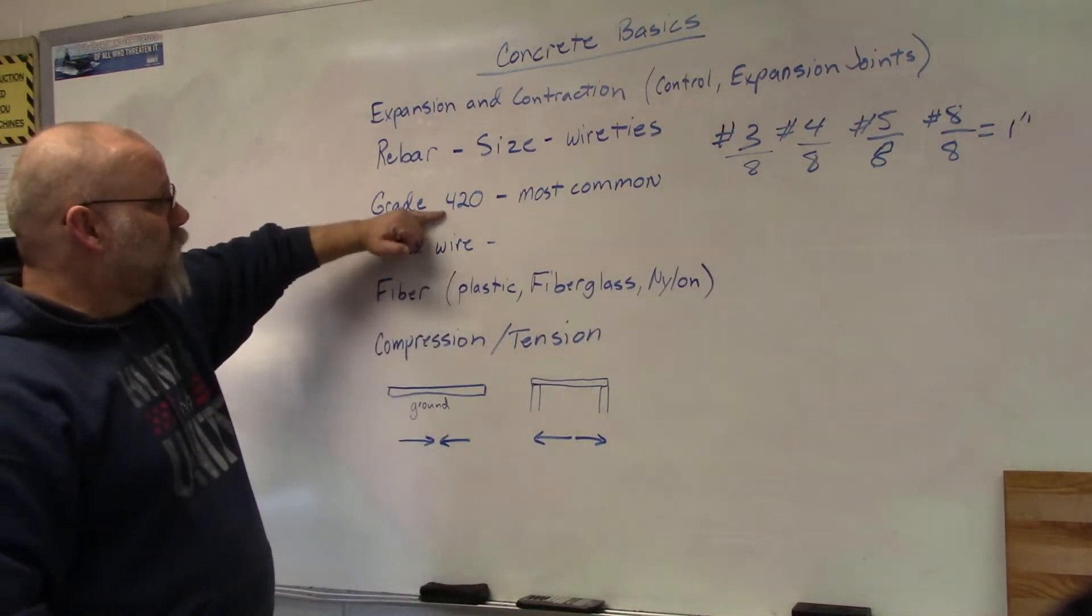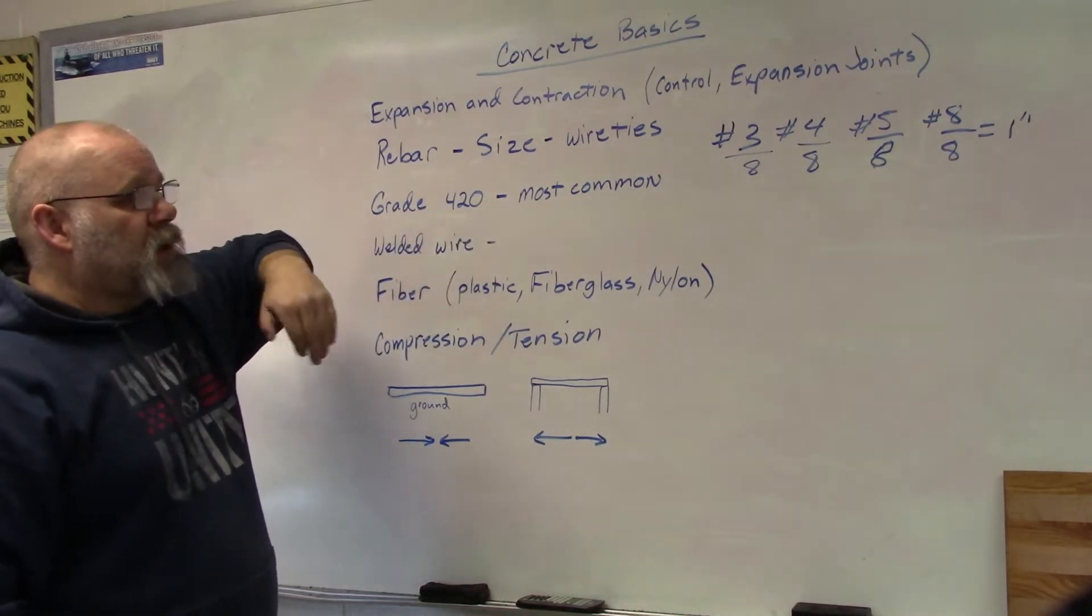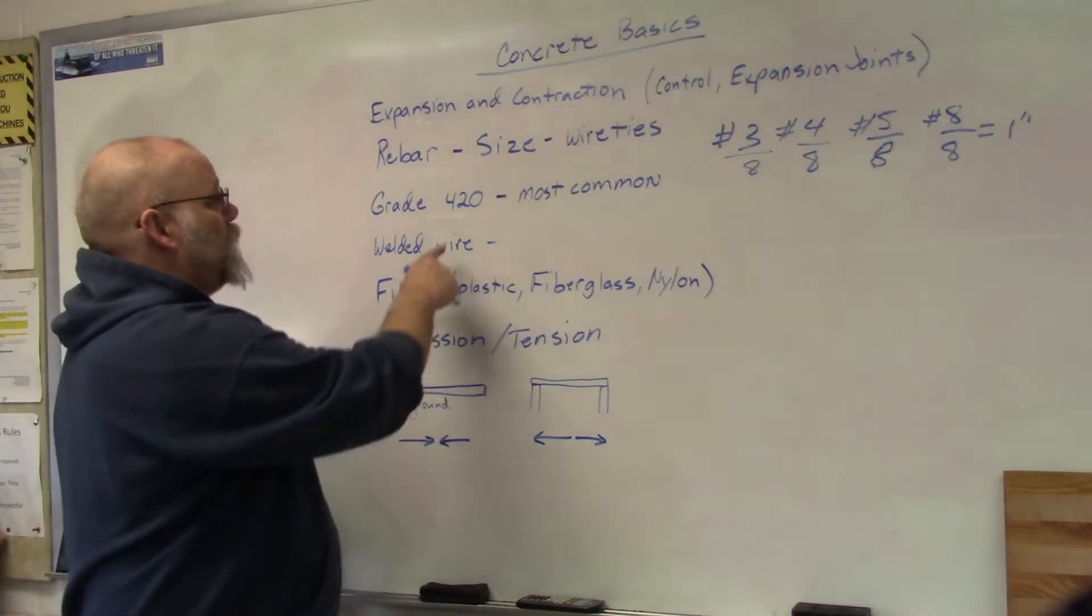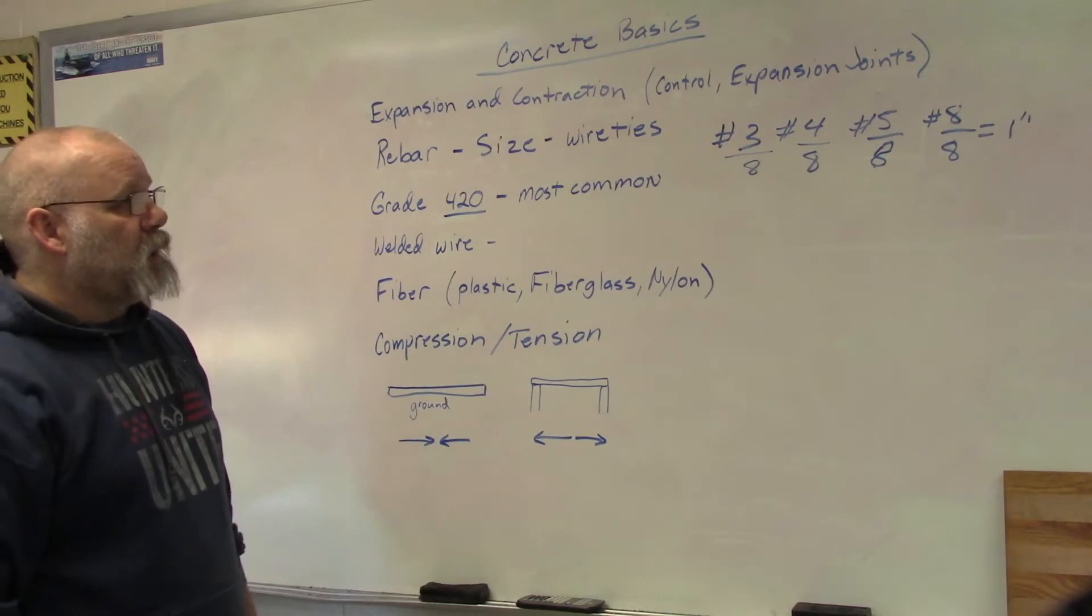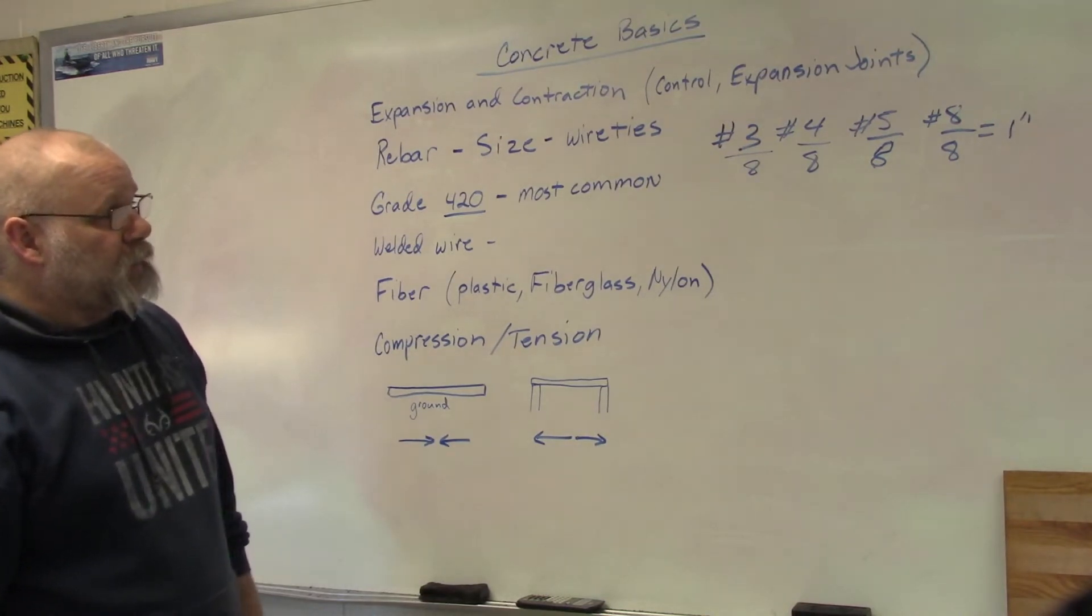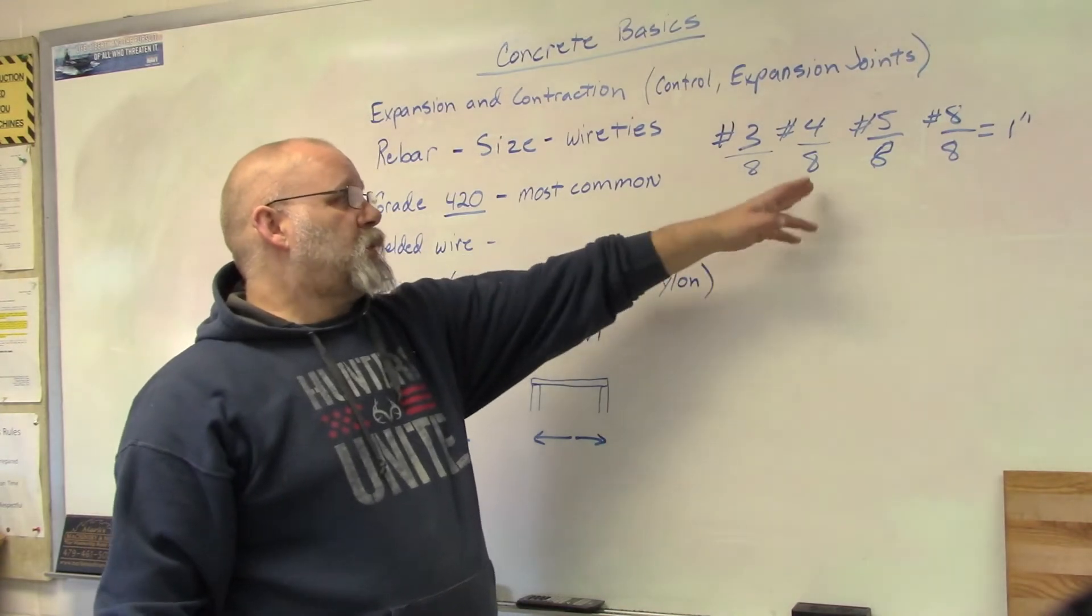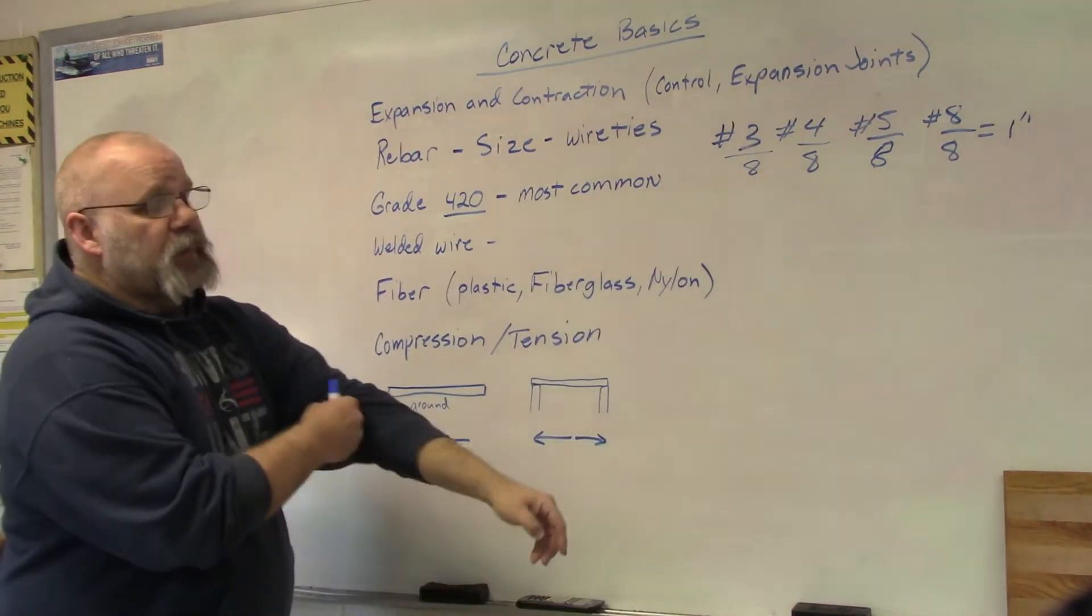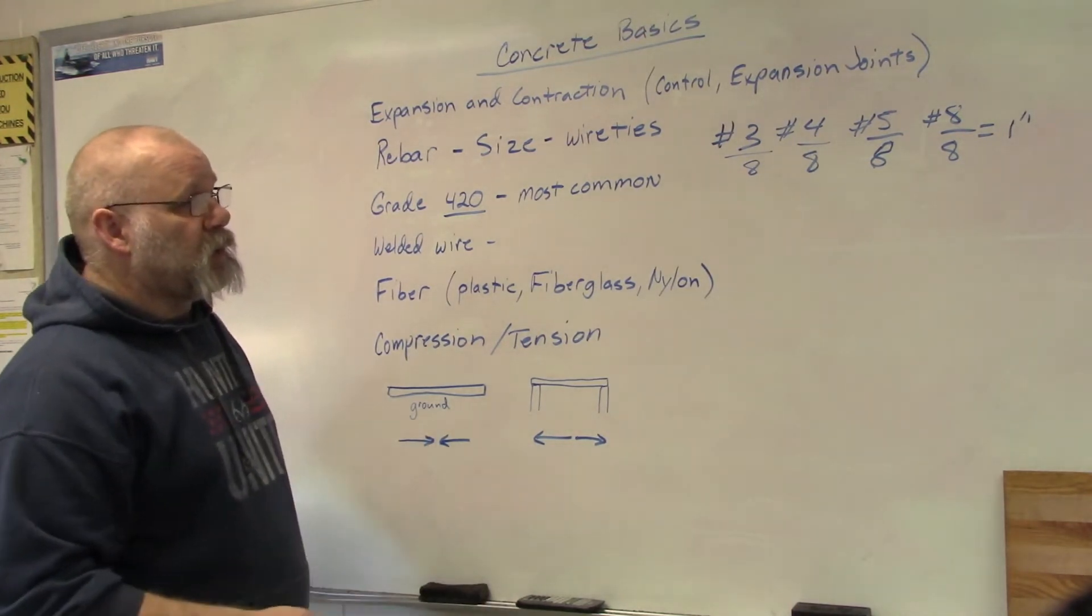The most common grade of rebar is 420 steel because not all steels are the same. You want to make sure that you have one that's going to work and that's the most common is the 420 grade steel. In most applications, you're probably going to use a four or maybe a five, again depending on what you're going to put on the concrete.